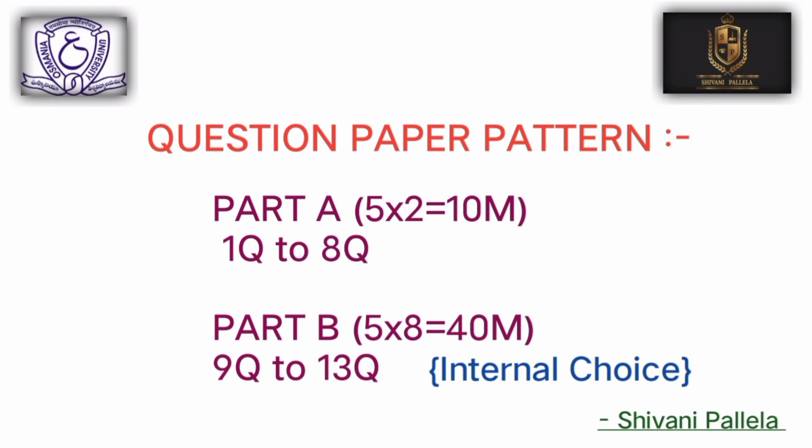The question paper pattern: Part A has eight questions. Out of eight questions you should attempt any five questions. Each carries two marks. Part B consists of eight-mark answers. So total 40 marks.